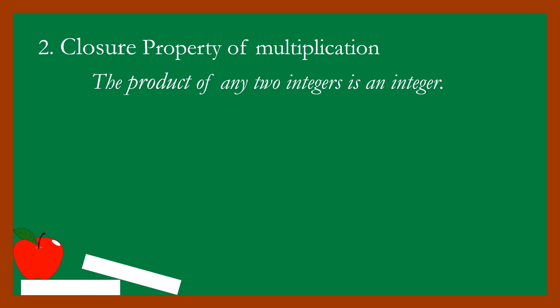Property number two: the closure property of multiplication. The product of any two integers is an integer. For example, three times four is equal to twelve — both integers, so the product is also an integer. Next, negative five times two is equal to negative ten — negative five and positive two are both integers, so the answer is also an integer.